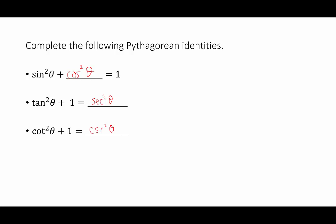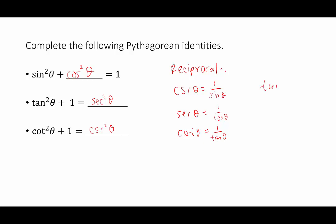Some other properties to keep in mind are the reciprocal identities: cosecant of theta is 1 over sine of theta, secant of theta is 1 over cosine of theta, and cotangent of theta is 1 over tangent of theta. We also have the ratio identities: tangent of theta equals sine theta over cosine theta, and cotangent of theta — the reciprocal of tangent — equals cosine of theta over sine of theta.